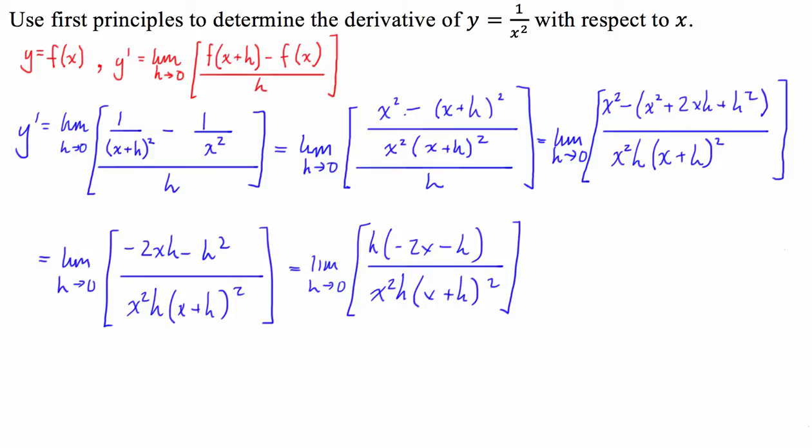Now, because I've done that factorisation now, I can cancel out those two h's. And I'll be left with the limit as h approaches 0 of (-2x - h) over x squared (x plus h) all squared. Now, I've got to a point here which I feel comfortable taking the limit as h approaches 0.